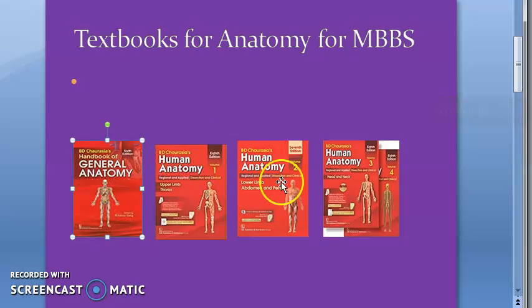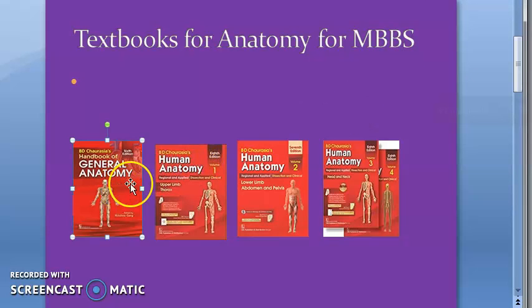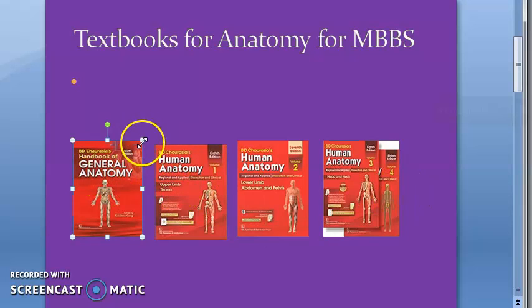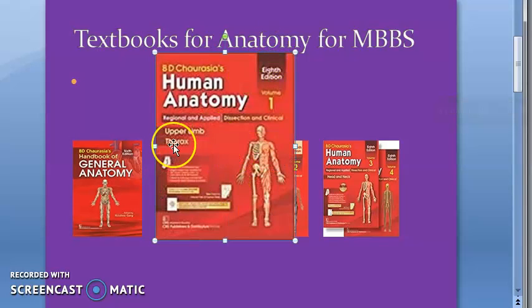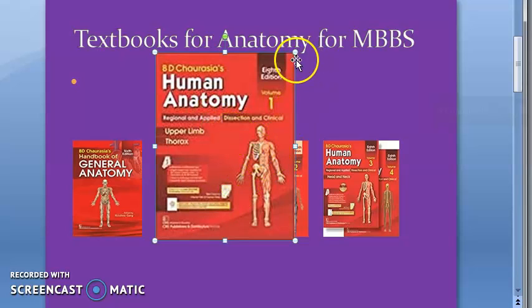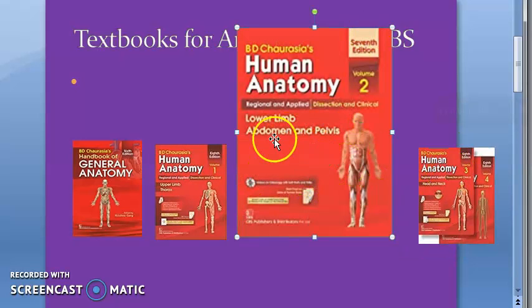Welcome. In this video we want to look at the textbooks for anatomy for MBBS, for medical students. These are the books that students actually read — Chaurasia. There are five books: general anatomy, then upper limb and thorax, which covers the upper part of the body, not head and neck. Part one covers upper limb and thorax, and part two covers lower limb and pelvis.